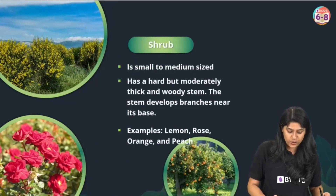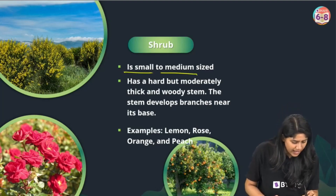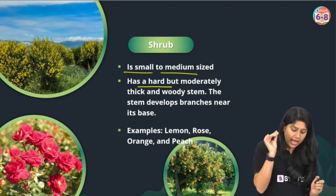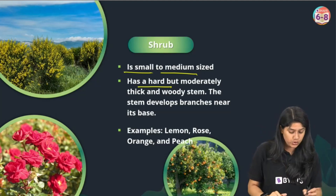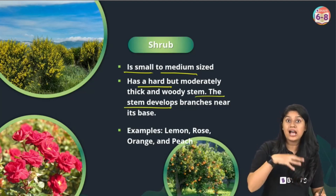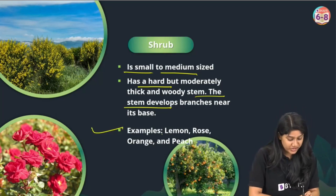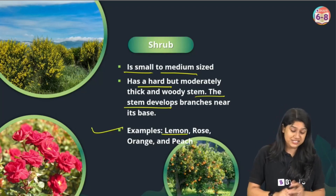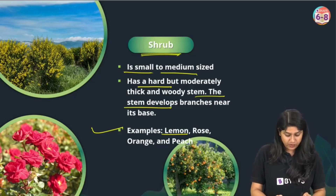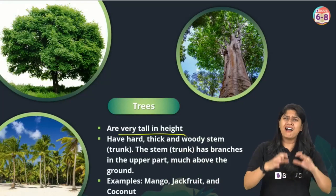Shrubs have a small to medium size with a moderately thick woody stem, and branches develop from the base. Examples include lemon, rose, orange, and peach. Large trees are very tall with a very hard, thick woody stem called a trunk, with branches arising in the upper part.